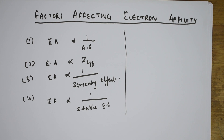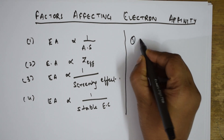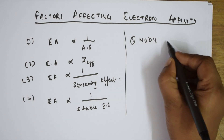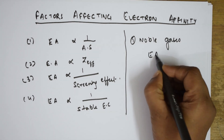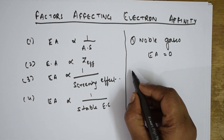For noble gases — the inert gases — the electron affinity is 0. Why? Because of their configuration: ns2 np6. There is no possibility of adding an extra electron. So noble gases have an electron affinity value of 0.